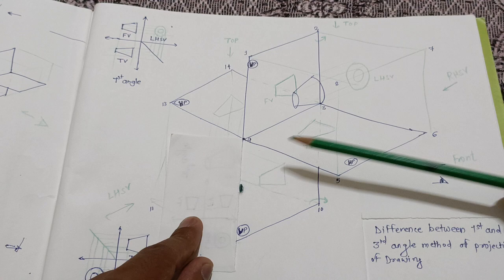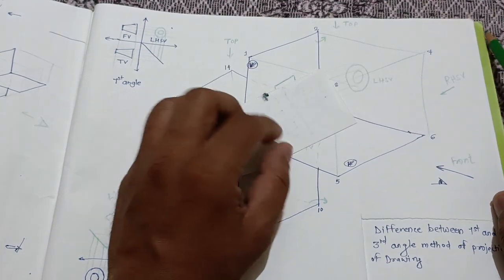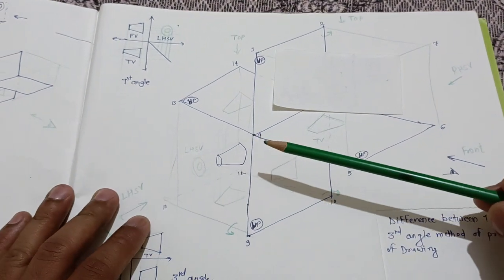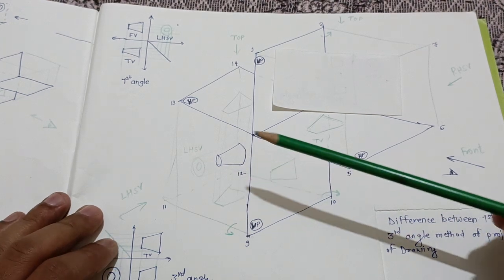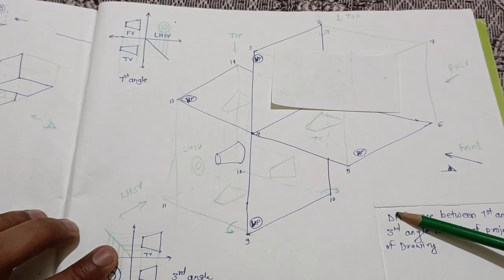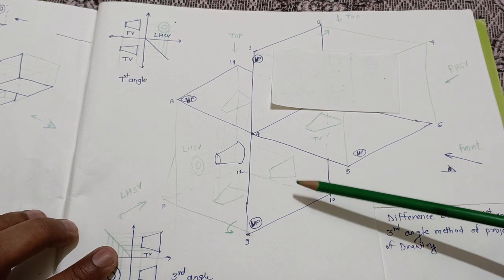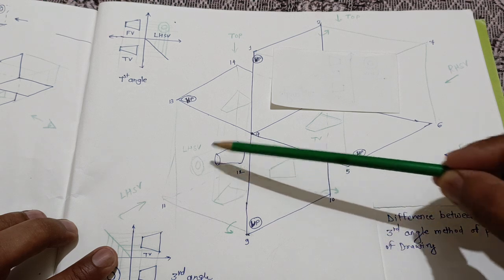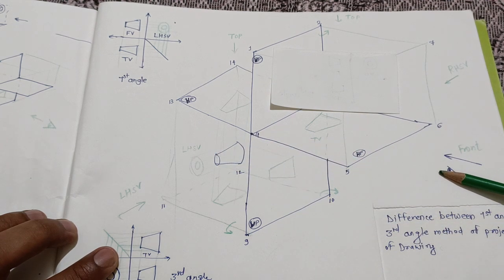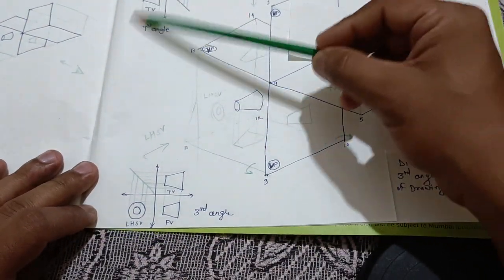Now let's talk about the third angle method. In the third angle method, always remember the object is placed in the third quadrant. The direction of viewing is the same. The observer is here, then the vertical plane, and then the object — so observer → plane → object. The plane is in between the object and observer in the case of third angle method.